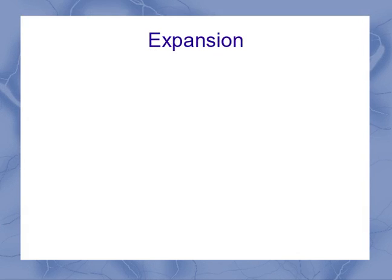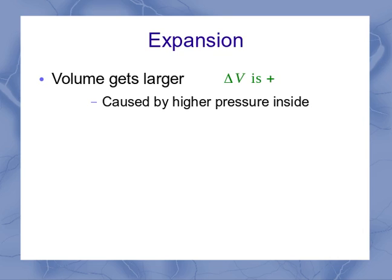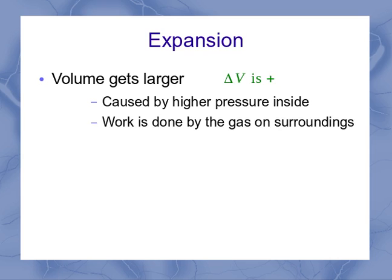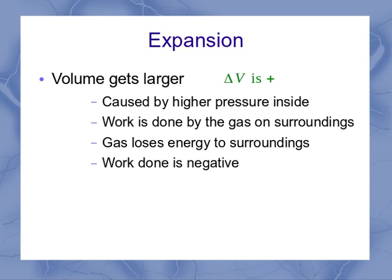Let's think again conceptually. If I've got an expansion, that means the volume gets larger and my delta V or DV is positive. This is going to be caused by higher pressure inside compared to outside, and that means the work is done by the gas on its surroundings. The gas loses its energy to the surroundings, so the work done should be negative. If I go back to that general equation, minus P delta V, if my delta V is positive, I end up with negative work, which is what I expect.